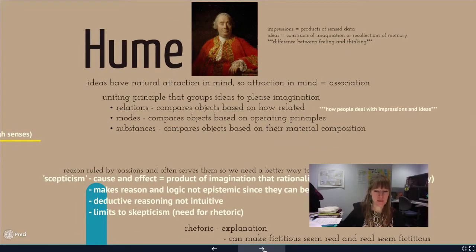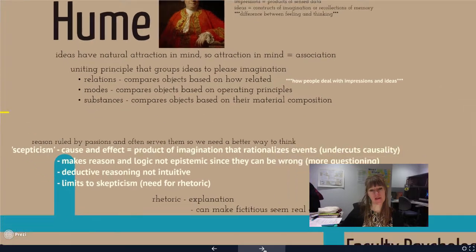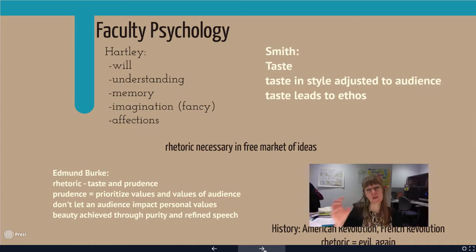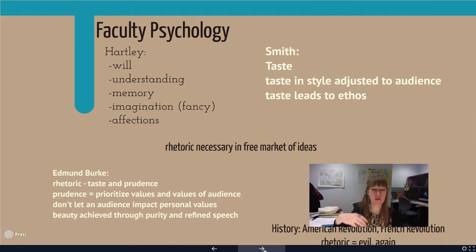Hume comes next with the idea of skepticism — how can we use deductive reasoning in a very specific way so that we can limit the need for rhetoric. Next, we have more focus on faculty psychology with some updated categories: will, understanding, memory, imagination, and affections. Then we have Smith, who adds taste and the way taste and style and prudence influence all of this. We still see elements of this heavily in literary theory — how ideas of taste, value, style, and the canon influence how we argue or understand from a cultural perspective.